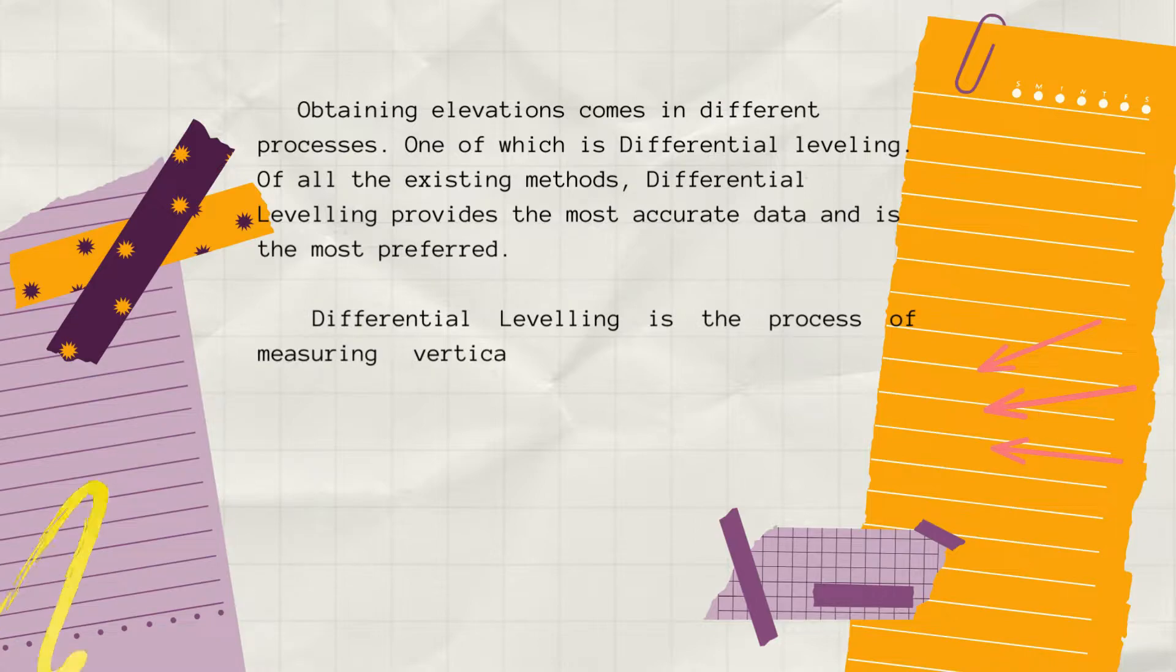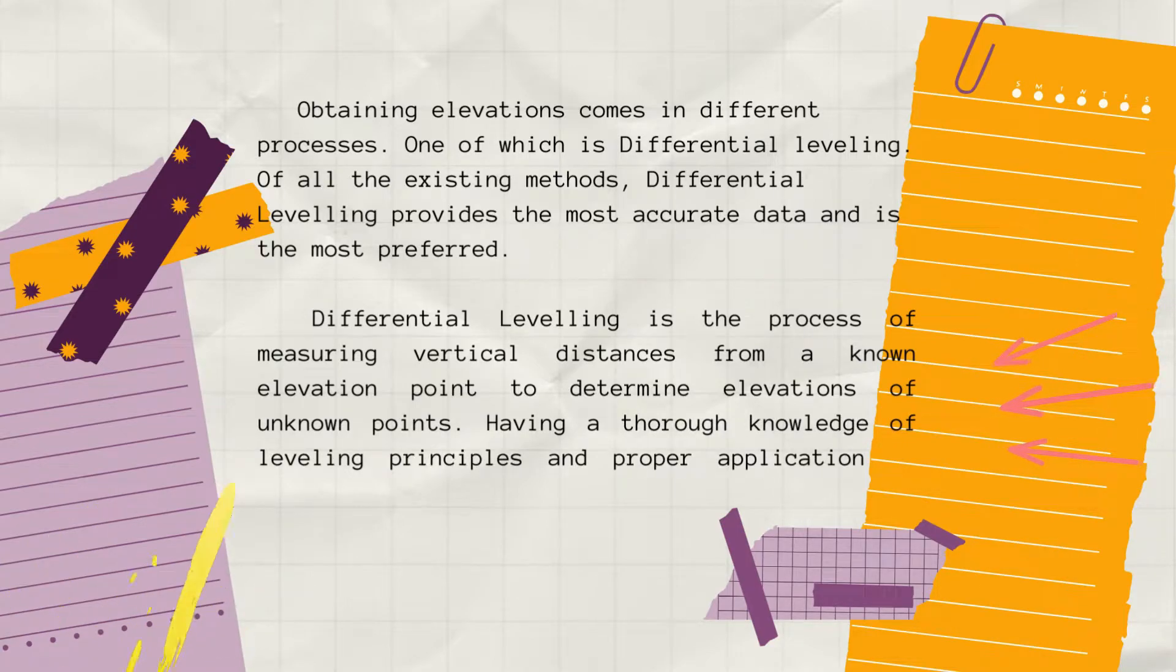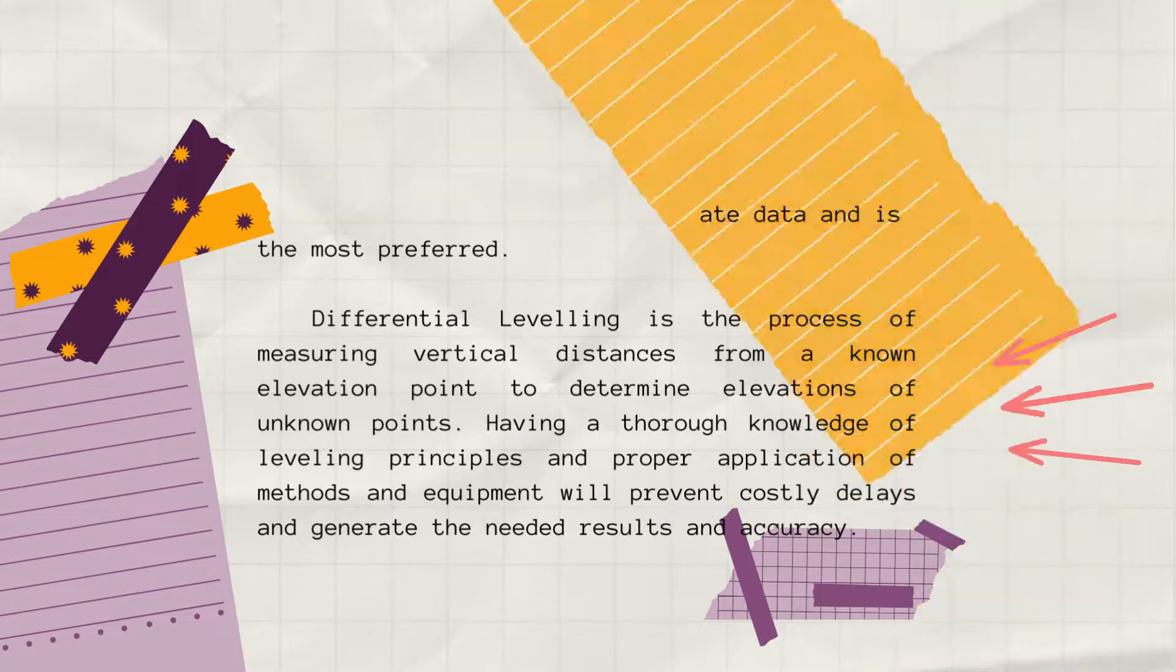Differential leveling is the process of measuring vertical distances from a known elevation point to determine elevations of unknown points. Having a thorough knowledge of leveling principles and proper application of methods and procedures will prevent costly delays and generate the needed results and accuracy.